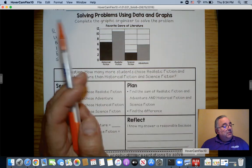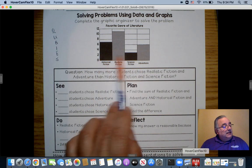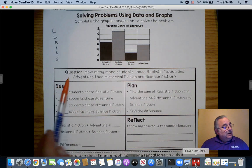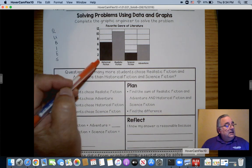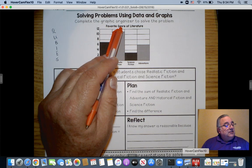It's a good strategy and we can use it across all contents. So I'm going to read the problem first. It says complete the graphic organizer to solve the problem, so I'm looking at the chart right here, then I'm looking at the graphic organizer here. So I'm going to be reading it first. I got my favorite genre of literature: historic, realistic fiction, science fiction, adventure.